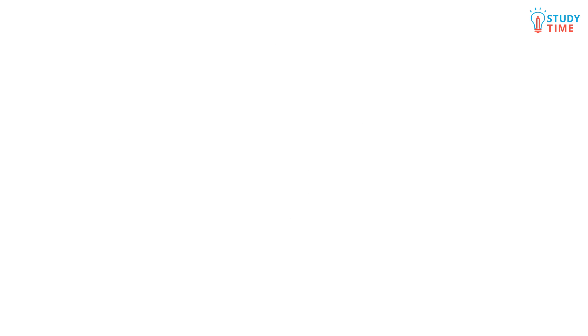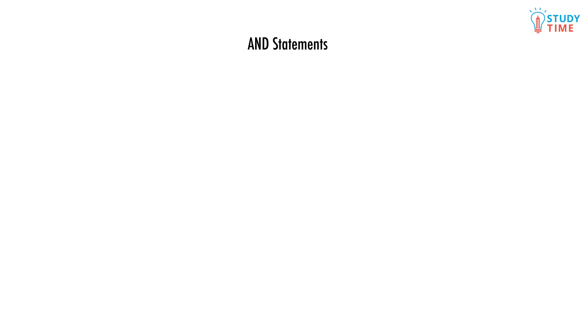In NCA level 2, we can expect AND statements as well. This is when we multiply our probabilities. Try to picture a Venn diagram. In the circle on the left, we have the probability that someone goes to the dairy and buys something to eat, 40%. In the circle on the right, we have 20%, the probability that someone buys something to drink.